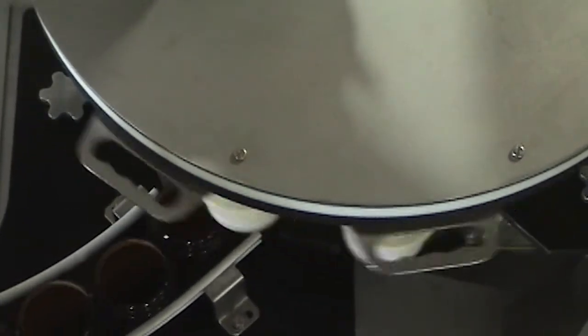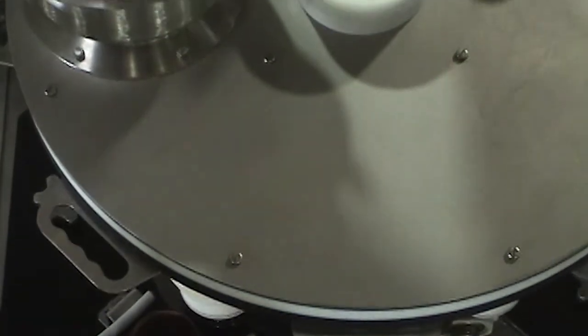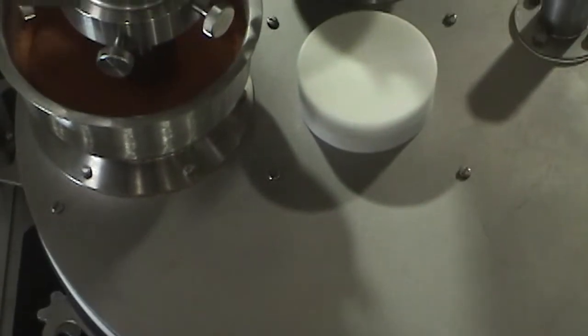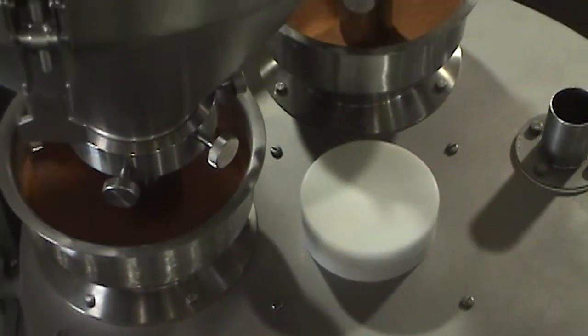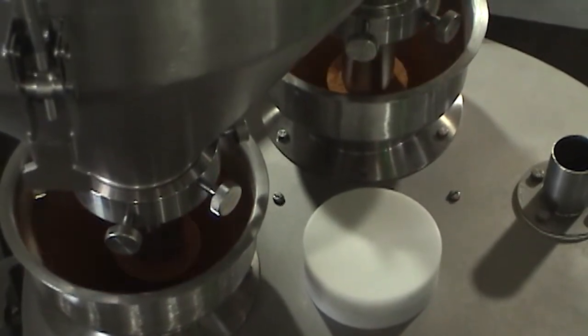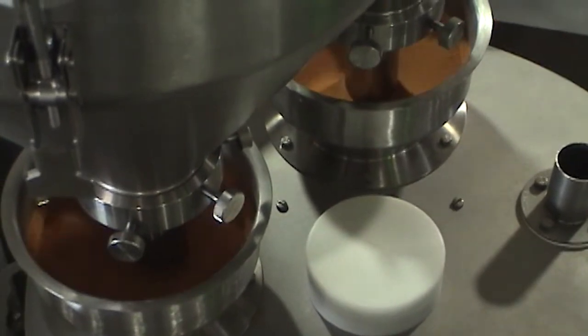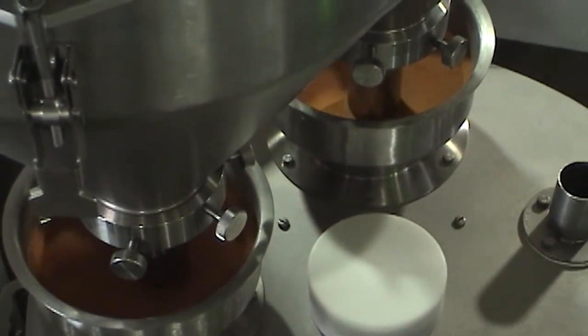All Nalbach's auger filling systems feature self-centering tooling resulting in faster changeovers and cleaning times, stainless steel product contact parts and aluminum structural parts for exceptional durability, and an empty hopper function for quick product changeovers.